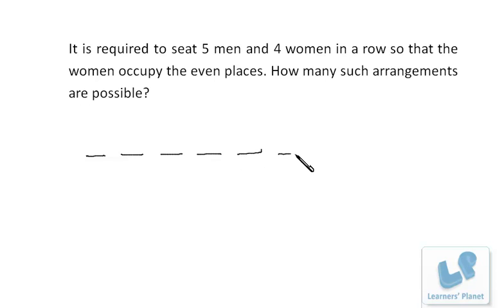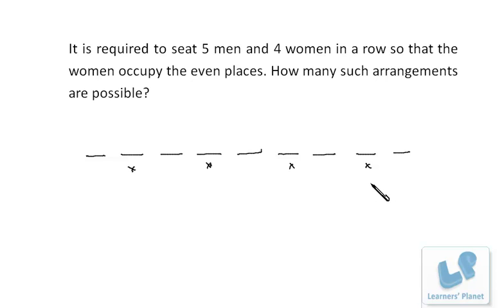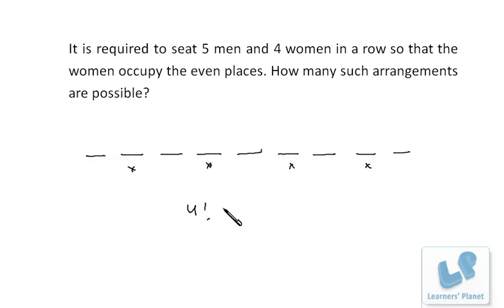Next problem: there are nine seats numbered 1 through 9. Four women have to sit at the even places — positions 2, 4, 6, and 8. So these four positions are reserved for women. Four positions and four women — four women can sit in 4 factorial ways. For the first woman there are four choices, second woman three choices, third woman two choices, and the last woman one choice. So four women can take four places in 4 factorial ways.